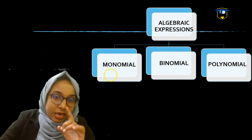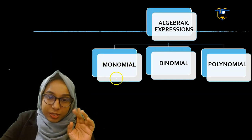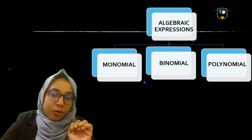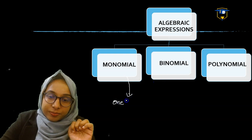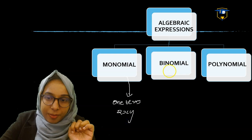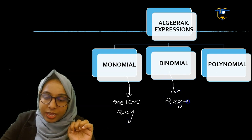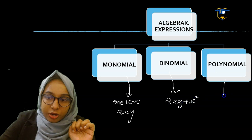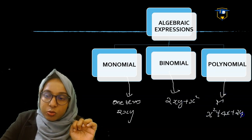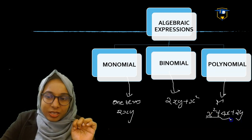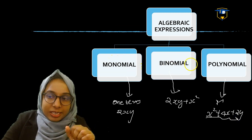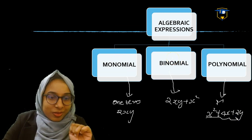According to the number of terms, algebraic expressions are classified into monomial, binomial, and polynomial. Monomial contains one term, for example 2xy. Binomial contains two terms, for example 2xy plus x squared. Polynomial contains more than two terms, for example x squared plus 4x plus 2y.